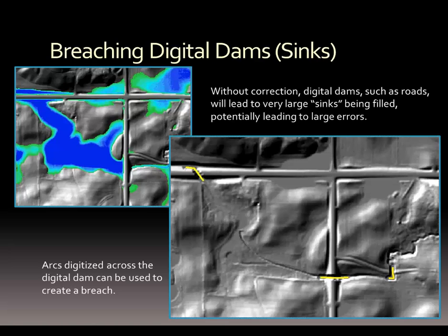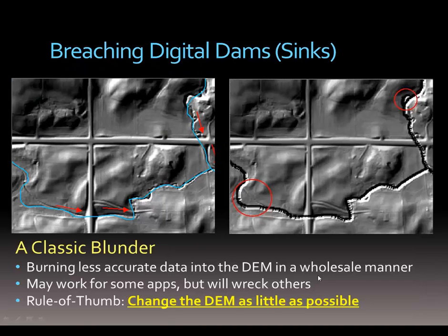The next feature we also have to change or allow for in our hydrological conditioning is a sink. The digital dam creates a sink that doesn't really exist. So by breaching it, we're providing access — we're burning in that culvert into our digital elevation model as part of the conditioning process. An important caveat: when establishing and breaching these digital dams, we want to do as little as possible, because we're introducing data and we want to make sure we only introduce more accurate data to breach the digital dam and avoid inadvertently bringing less accurate data into the DEM.